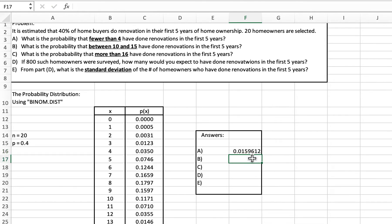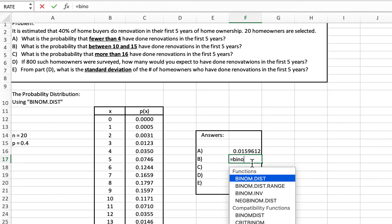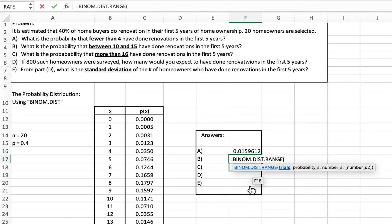We could round it to however many places we want to. Looking at part B, we want between 10 and 15. We'll assume that that is inclusive. So binom.dist.range with the same information: 20, 0.4, 10, 15.